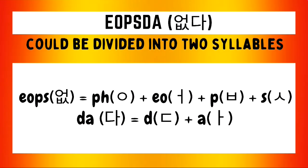How do we write Opda in Hangul? This is composed of two syllables. The first syllable is Op, written by drawing first an ieung character, followed by the o character, followed by a siot character. For the second syllable Da, we need to draw first a digeut character, followed by an a character. Then we combine these two to form the Hangul of the word Opda.